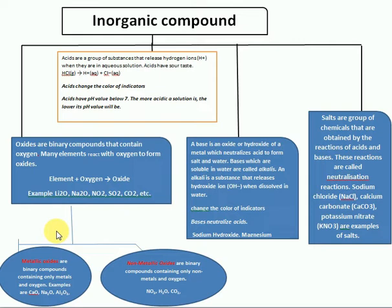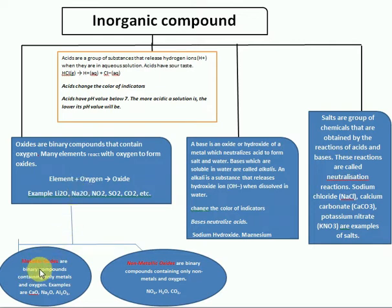Metallic oxide means metal plus oxygen. Oxide can be divided into two types: metallic oxide and non-metallic oxide. Metallic oxides form by the reaction of metal with oxygen; non-metallic oxides form when non-metals react with oxygen.